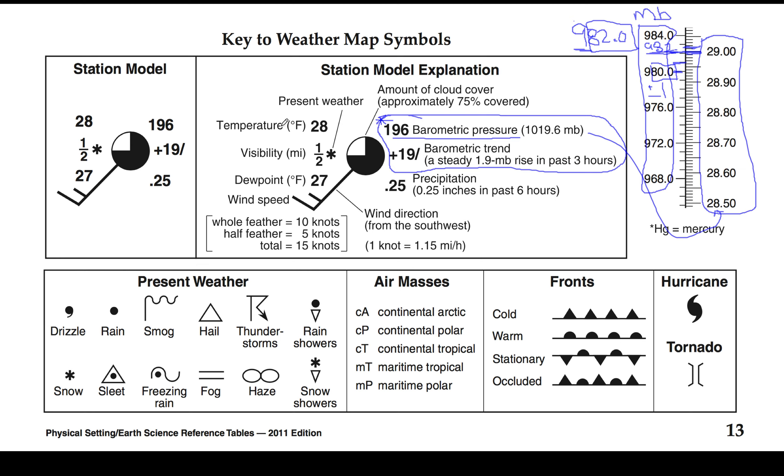Now the rest of the stuff—temperature here, visibility, present weather, dew point, wind speed and direction, precipitation—all of this information is straightforward. You just need to make sure you place it in the correct location when you're doing any sort of drawings. Present weather is down here; this is a good example of that.